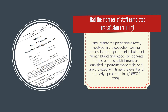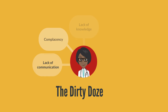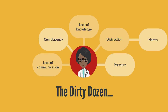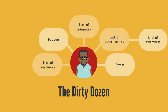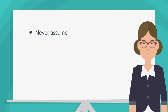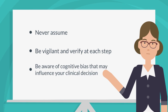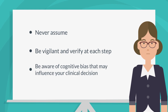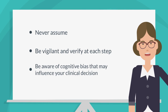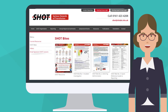This is a good place to start. However, SHOT data has also shown that these measures by themselves are not enough to reduce errors in transfusion practice. Exploring the underlying reasons submitted for ABO incompatible transfusions, one or more of the dirty dozen consistently occur and are commonly identified by staff. It is critical not to assume, but to be vigilant and verify at each step. It is also important for staff to be aware of cognitive bias that may influence clinical decisions.